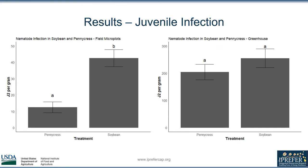Here we have two figures depicting juvenile nematode infection in field microplots on the left and in the greenhouse on the right. The treatments are composed of pennycress and a susceptible soybean variety. On the y-axis we observed the number of juvenile individuals residing in one gram of either soybean or pennycress root. In the field plots, results were statistically different, denoted by the A classification for pennycress and B classification for soybean. Pennycress only harbors about 20 percent of the juvenile population density seen on infected soybean. The greenhouse data was not statistically different, noted by the A classification for both treatments, though population size is still much lower comparatively. The bars also denote standard error.